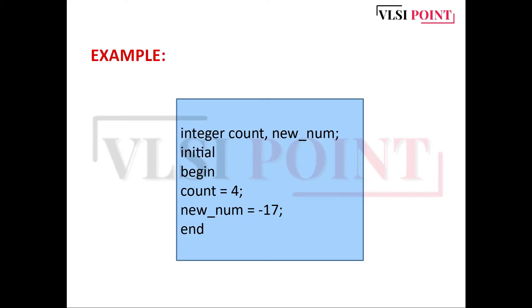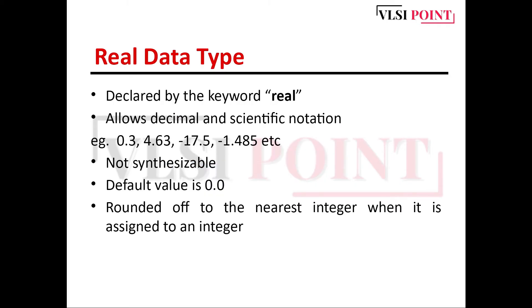Consider this example: count and new_num are declared as integer variables. count is assigned the value 4 and new_num is assigned minus 17, showing how to declare integer variables and assign both positive and negative values to them.